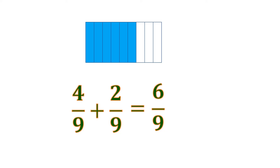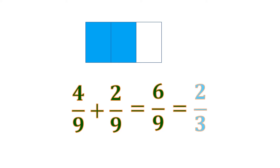But then, if we remove some of the slices, it will look like this. That means 6 ninths can be reduced into 2 thirds. So the sum of 4 ninths and 2 ninths is 2 thirds.